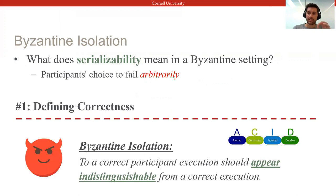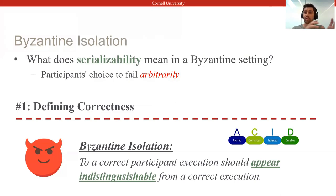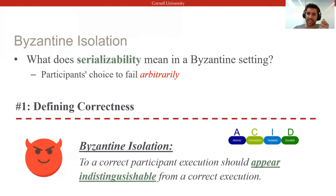What we strive to guarantee is that the execution appears to correct clients as indistinguishable from a serializable execution involving only read and write operations issued by correct clients. Framed differently, we submit that it's completely okay for a Byzantine client to wreak havoc and violate ACID guarantees, as long as every correct client observes only state comprised of serializable transactions.